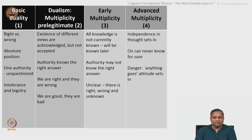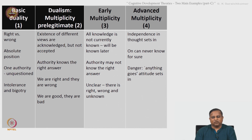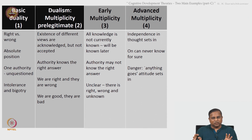Stage three is the early multiplicity stage, where a person realizes all knowledge is not currently known and will be known later. Authority may not know the right answer; there is right, wrong, and the unknown that the person is able to give consideration for. Then stage four — advanced multiplicity — where independence in thought sets in. One can never know for sure also starts dawning on the person. However, there is a danger that an 'anything goes' attitude can set in; the person becomes resigned. This is something to watch out for and help the student get out of.